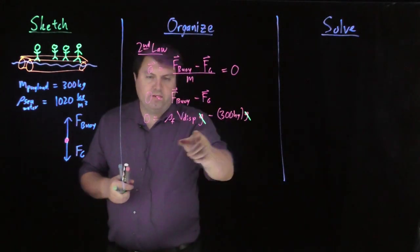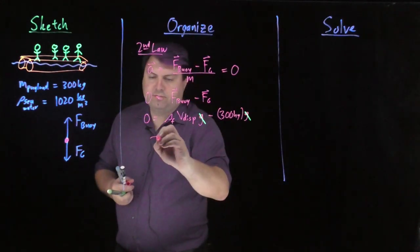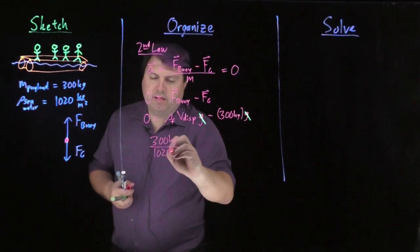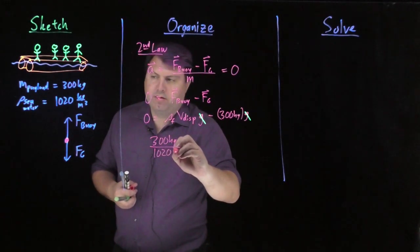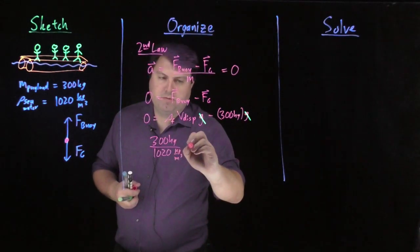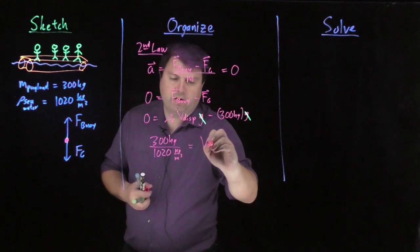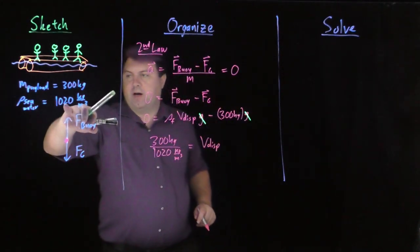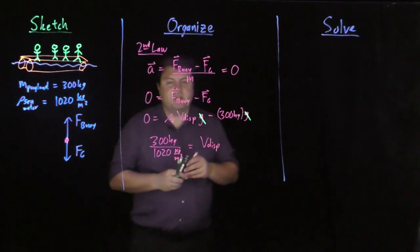And then moving this 300 kilograms over, and dividing by 1020 kilograms per meter cubed. And that's equal to our volume displaced. So we've substituted in the density of seawater.